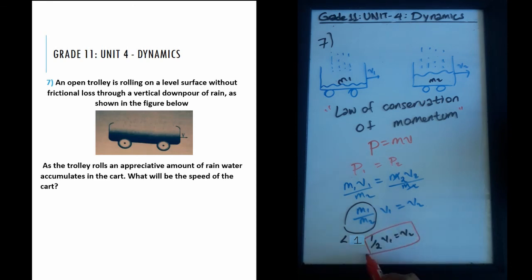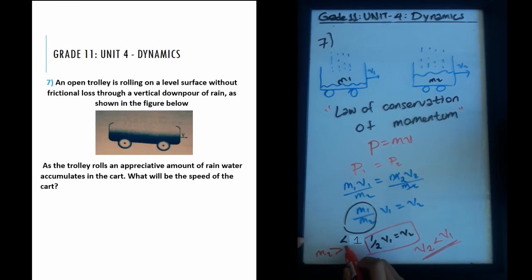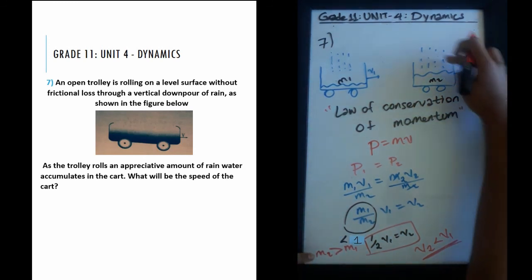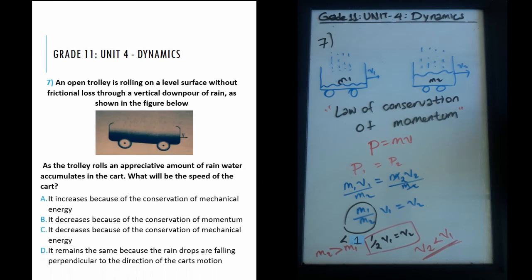With those example values, v₂ = ½ × v₁, meaning velocity two is less than velocity one. Generally, as long as m₂ is greater than m₁ — which it is because water keeps accumulating — v₂ will always be less than v₁. Therefore, the speed decreases due to the law of conservation of momentum. Looking at our choices, that is exactly choice B.